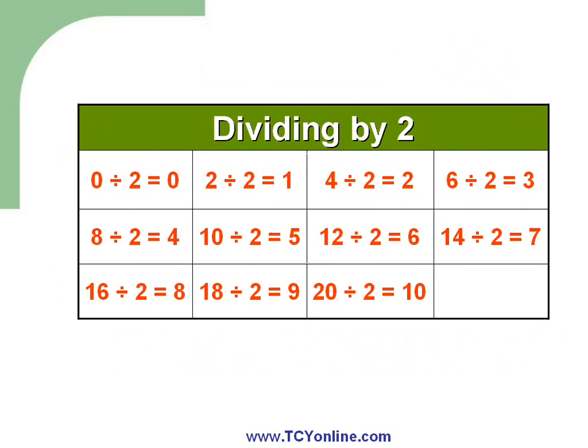Here is a table which shows the division by the number 2. When 0 is divided by 2 we get 0; when 2 is divided by 2 we get 1; when 4 is divided by 2 we get 2; when 6 is divided by 2 we get 3. The rest of the division values are shown in the table.